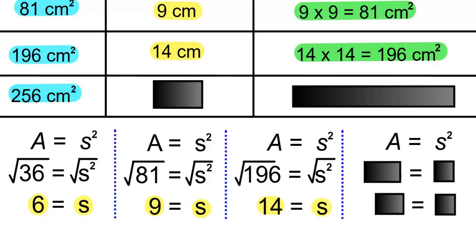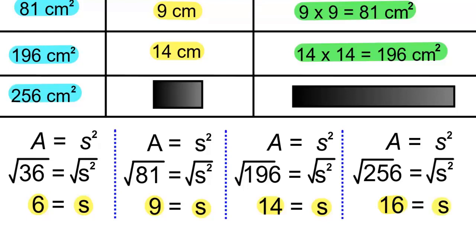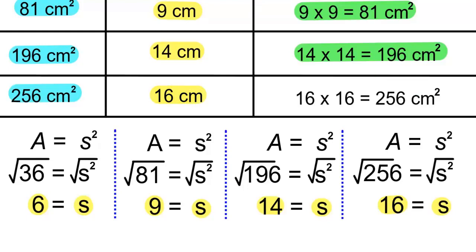In our last example, the area is 256 centimeters squared. A equals S squared. 256 equals S squared. Take the square root of S squared and the square root of 256. The squared and square root cancel, giving us S, and the square root of 256 is 16. So S equals 16. The side length is 16 centimeters. And the area as a product will be 16 times 16 equals 256 centimeters squared.